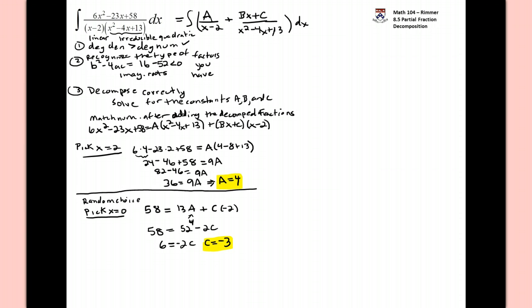We have the value of a, we have the value of c. Let me over here now go try to get the value of b. I'm going to pick another sort of seemingly random choice, something easy to plug in. I'm going to choose x equal to 1. What does that lead to? Well, by picking x equals 1, back to the original, we end up with the following statement: 6 minus 23 plus 58 is equal to a times 1 minus 4 plus 13, b plus c times a negative 1.